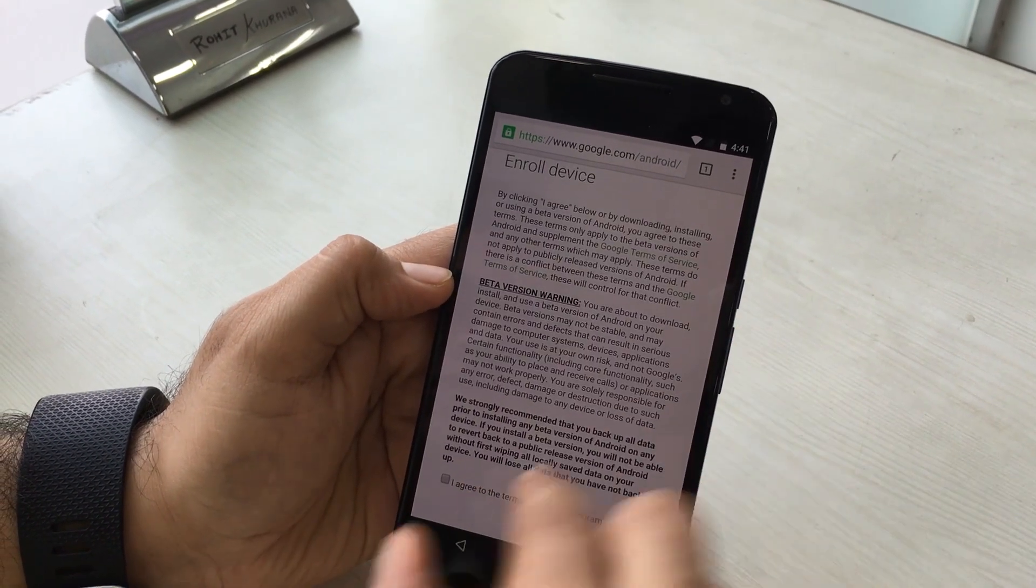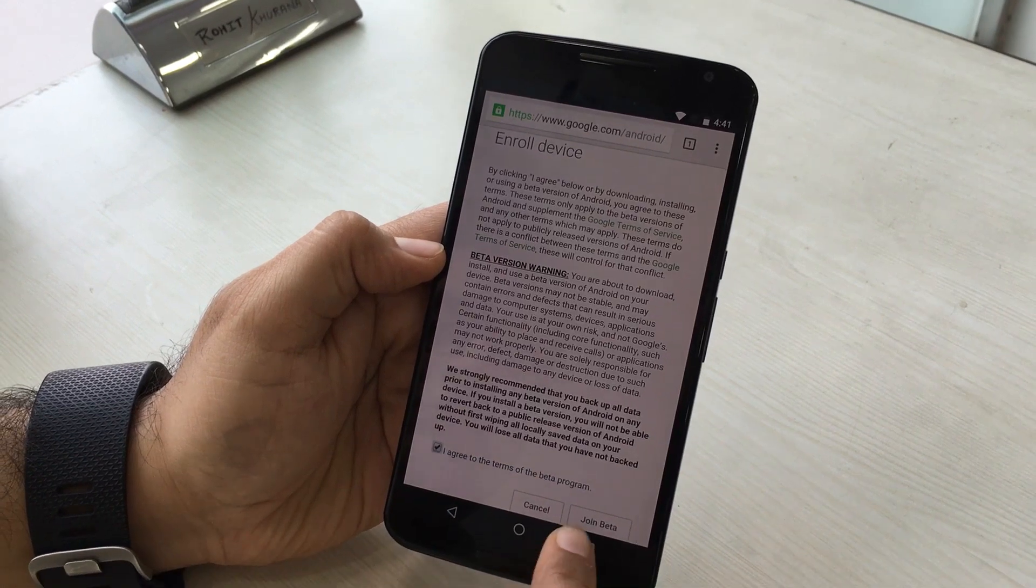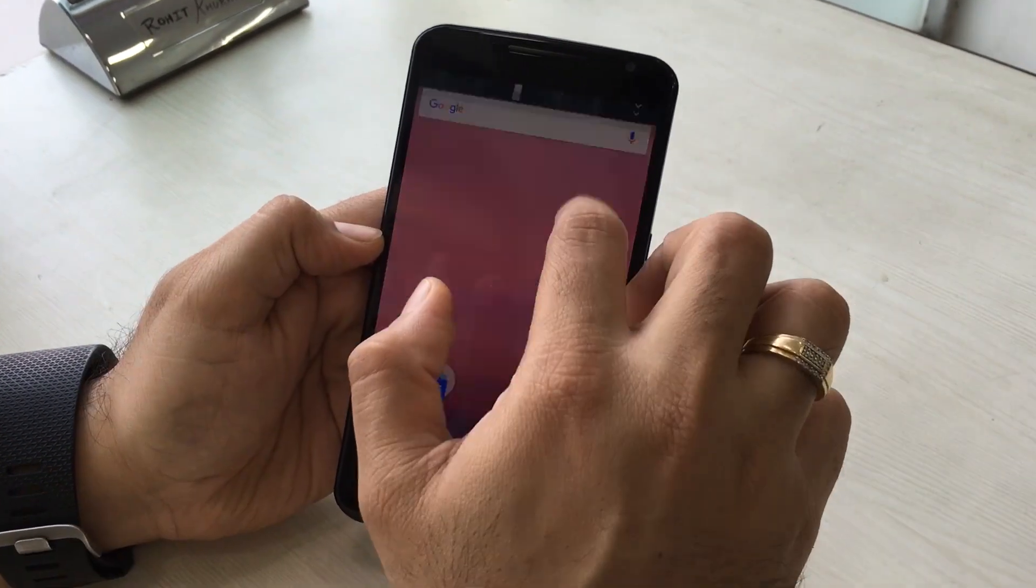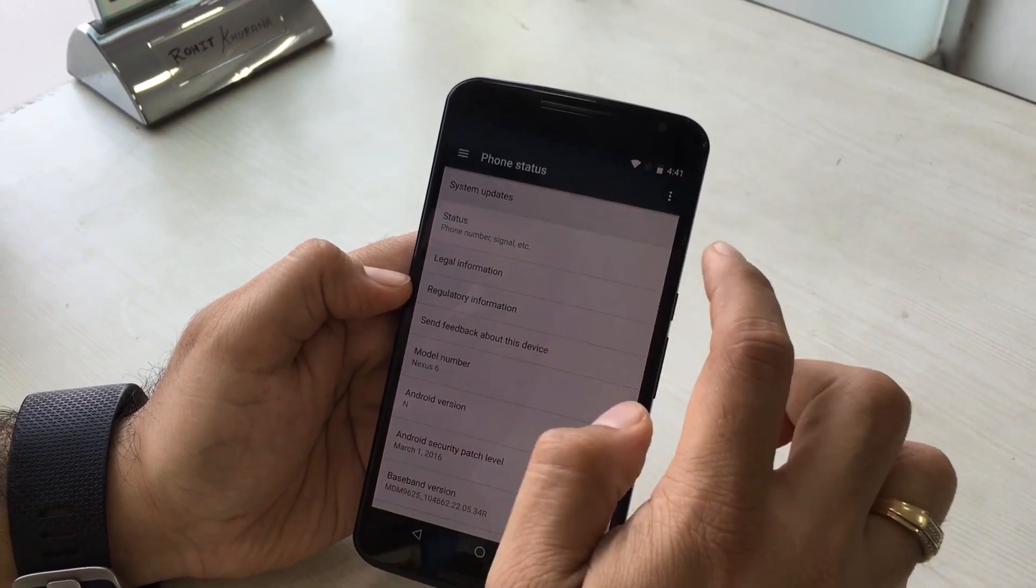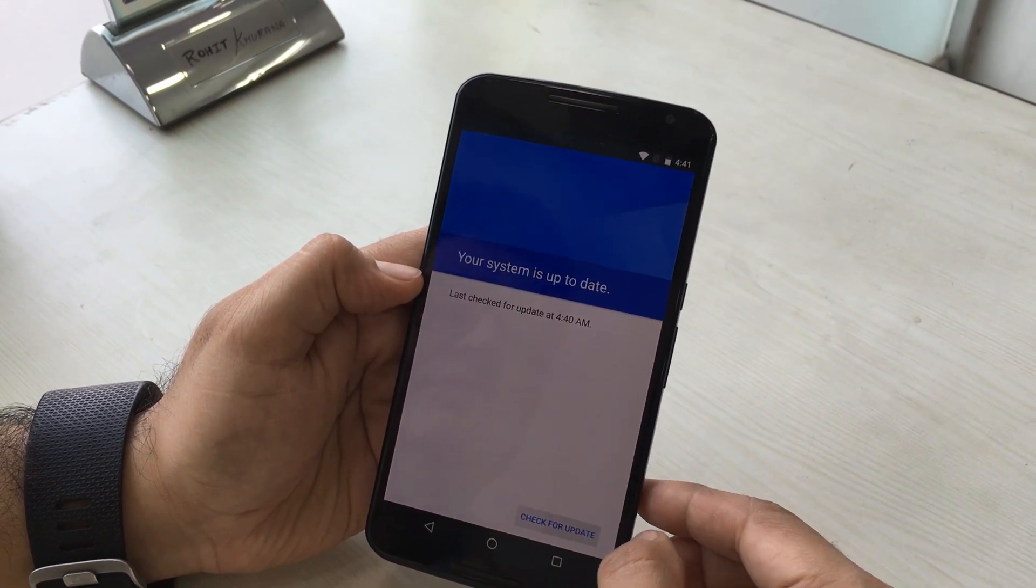Just hit on enroll device and you will find an OTA update right there on your phone. Once you download that and restart your phone, your Android N update will be downloaded and you do not need to do any manual flashing for that.